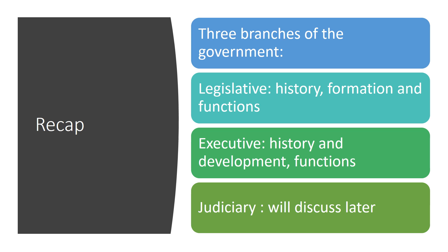Before we start, let's recap what we've been doing for the last couple of weeks. We've been discussing that any government around the globe has three branches: a legislative, an executive, and a judiciary branch. We've discussed the functions of the legislative branch and its history, different forms and types of legislative bodies, and we did a brief introduction about the executive, its history, development, and main functions.